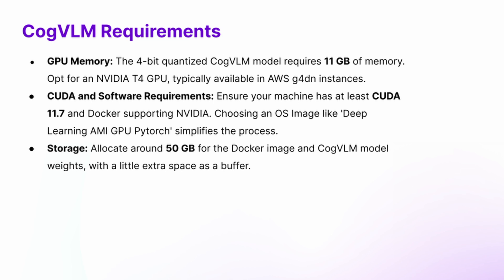Before we dive into setup instructions, let's take a quick peek at the hardware and software requirements. The main requirement is an NVIDIA T4 GPU with 16GB of memory. We need 11GB to run the 4-bit quantized version of CogVLM. You'll also need to ensure that your machine has at least CUDA 11.7 and Docker supporting NVIDIA runtime. Allocate around 15GB of storage for the Docker image and CogVLM weights, with a little bit of space as a buffer.